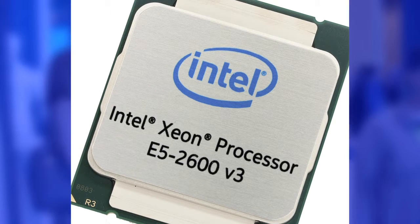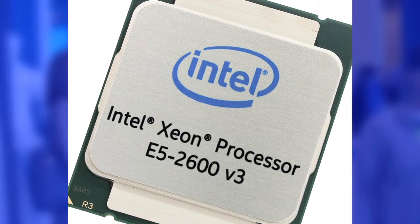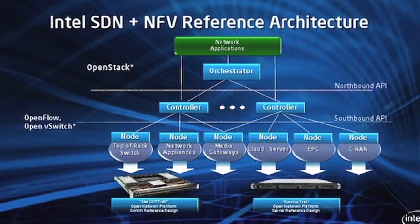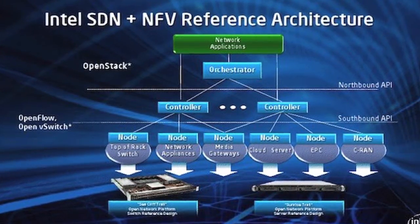Simultaneously, Intel also introduced a server reference architecture based on the Xeon E5 V3. We just launched an open network platform for server, bringing together the assets we have created — the technologies in our CPU, our acceleration chipsets and Ethernet components — with software including contributions to OpenStack and OpenDaylight, integrated on the platform as a reference architecture that presents a building block for networking services and appliances. This is the Intel Open Network Platform Server Reference Design, optimized for SDN and NFV.